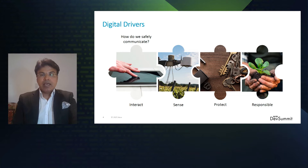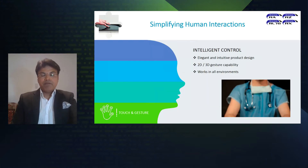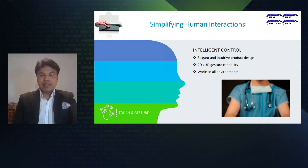Let me talk about the digital drivers behind smarter electronics, starting with how we safely communicate. Capacitive touch technology is becoming very elegant — you can design intuitive products using glass or metal, concealing the design in surfaces with fewer moving parts. Thanks to intelligent capacitive touch technology, you can create smart 2D/3D gesture control designs, reducing the need to physically touch surfaces, and it works in all environments including those with interference, noise, or water.